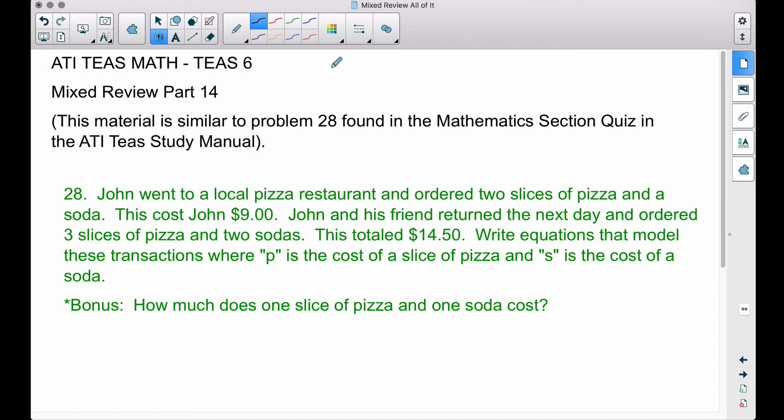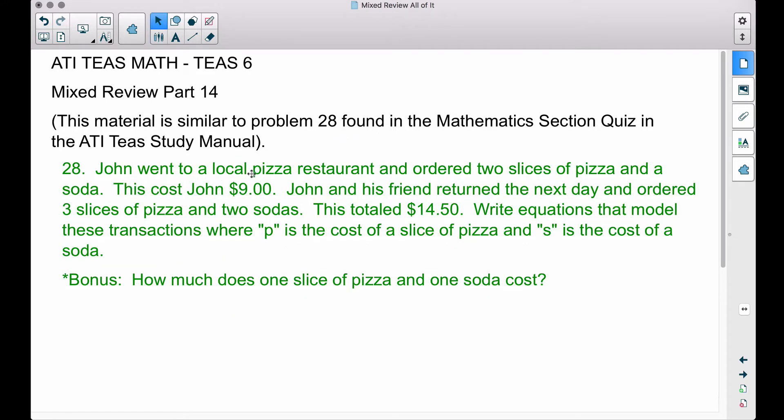Alright, in this video we're going to do the Mixed Review Part 14. This is similar to problem 28 found in the Mathematics Section Quiz in the ATI TEAS Study Manual. Number 28: John went to a local pizza restaurant and ordered two slices of pizza and a soda. This cost John nine dollars.